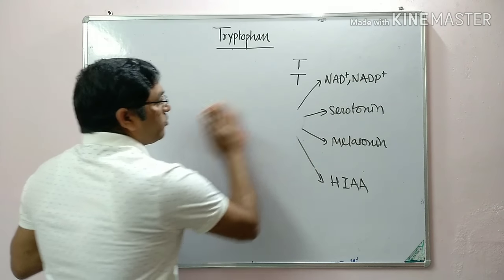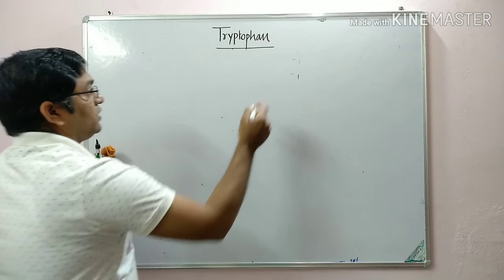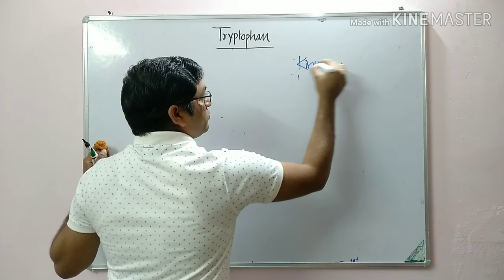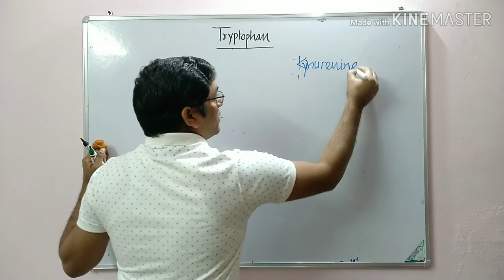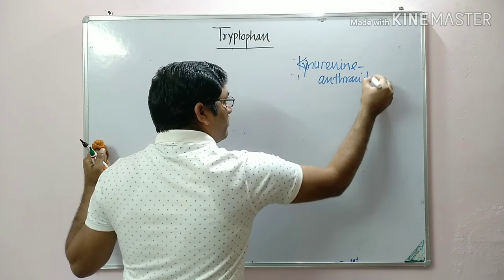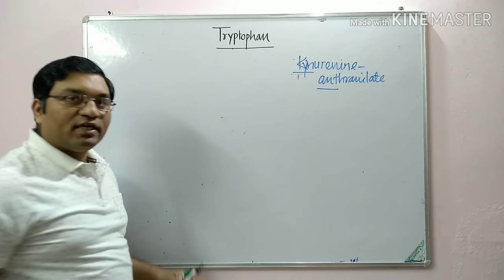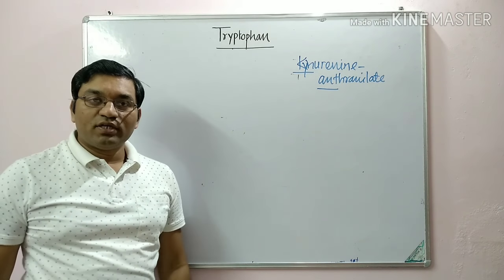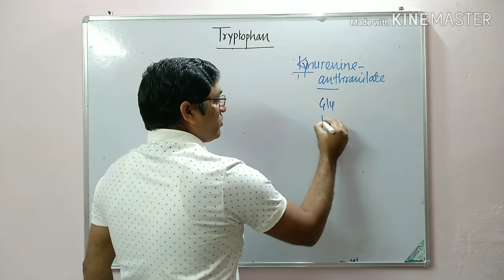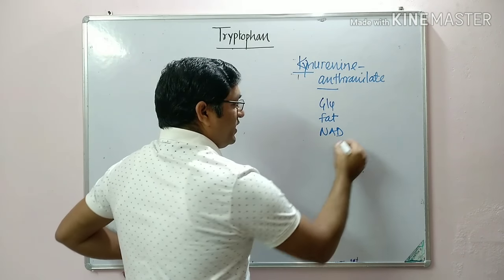Tryptophan follows two important pathways. The first is the kynurenine-anthranilate pathway. Kynurenine and anthranilate are the intermediates in this pathway, which is why it is named accordingly. Through this pathway, there is formation of glucose, fat, and synthesis of NAD and NADP. This pathway occurs in the liver.